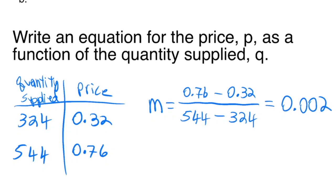So my slope is 0.002. Once I have the slope, I'm going to use point-slope form. It's going to be the variable price minus the initial price equals the slope times the variable quantity minus the initial quantity.